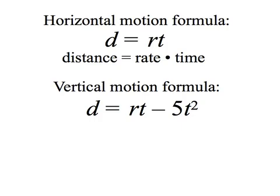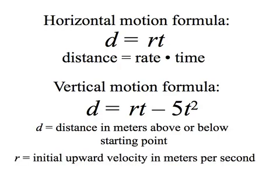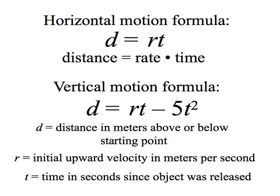The vertical motion formula is used when objects are thrown or in some other way projected up from the ground, and it helps track the distance from the ground based on the time that the ball or other object is in the air as it goes up and comes back down. D stands for the distance in meters above or below the starting point, R is the initial upward velocity in meters per second, and T is time in seconds since the object was released.